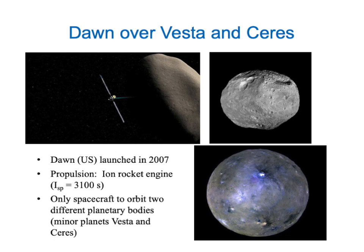Here's the Dawn spacecraft. Dawn was launched in 2007, and its propulsion is an ion rocket engine with a specific impulse of over 3,000 seconds. It needs that because it's the only spacecraft ever to orbit two different planetary bodies. It went into orbit around the minor planet Vesta, then left Vesta and went to the other minor planet Ceres — two of the largest bodies in the asteroid belt — and studied them for several years. Its mission was ended quite recently.